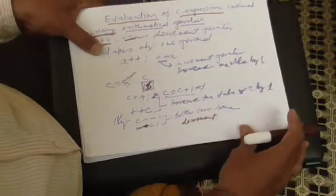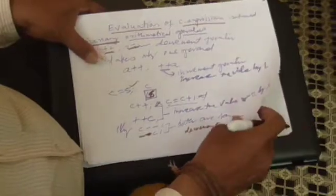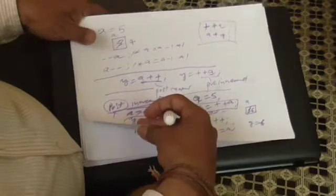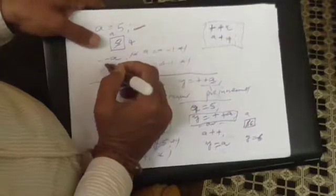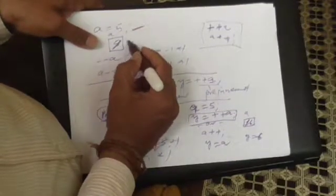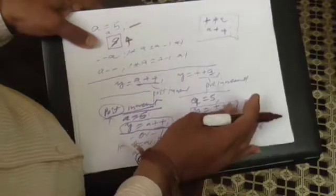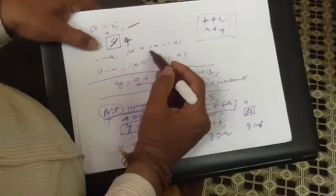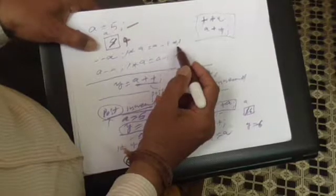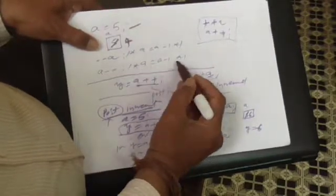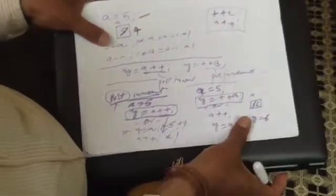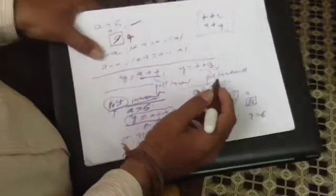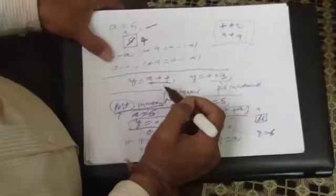The decrement operator decreases a variable by 1, and the increment operator increases the value by 1. If the initial value of A is 5 and you write --A, the 5 is removed and 4 is the new value — equivalent to writing A = A - 1. As long as the operator is not part of any expression, there is no difference at all, but once it becomes part of an expression, one has to be careful.